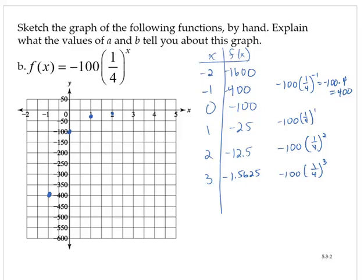And that negative 12.5 is incorrect. That should be a negative 6.25. So 2, negative 6.25 would be roughly here. 3, negative 1.5625, very close to the axis.